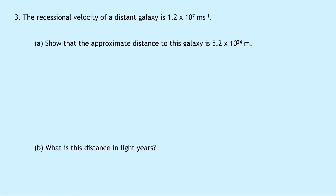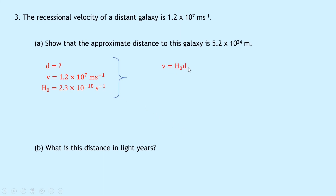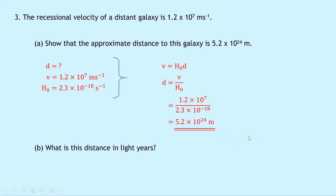Lastly, question three says that the recessional velocity of a distant galaxy is 1.2 times 10 to the 7 meters per second. Part A says to show that the approximate distance to this galaxy is 5.2 times 10 to the 24 meters. Writing down what we know: v is 1.2 times 10 to the 7 meters per second and H₀ is 2.3 times 10 to the minus 18 per second. Rearranging Hubble's law, d equals v over H₀, giving 1.2 times 10 to the 7 divided by 2.3 times 10 to the minus 18, which equals 5.2 times 10 to the 24 meters. So by using Hubble's law we've shown this to be true.